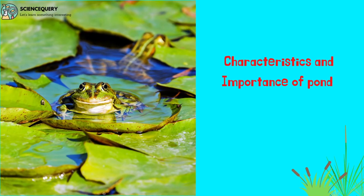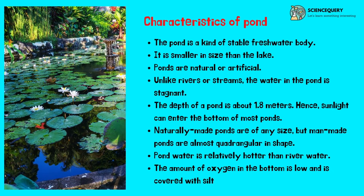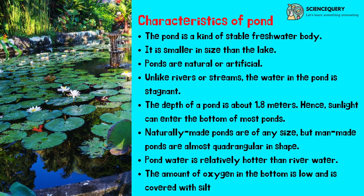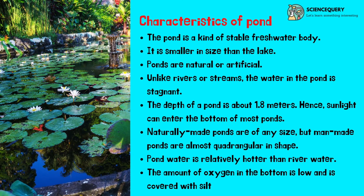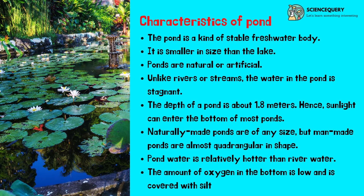First, the characteristics and importance of pond. The pond is a kind of stable water body. It is smaller in size than the lake. Ponds are natural or artificial. Unlike river or streams, the water in the pond is stagnant. The depth of the pond is about 1.8 meters, hence sunlight can enter the bottom of most ponds. Naturally made ponds are of any size, but man-made ponds are almost quadrangular in shape. Pond water is relatively hotter than river water. The amount of oxygen in the bottom is low and is covered with silt.